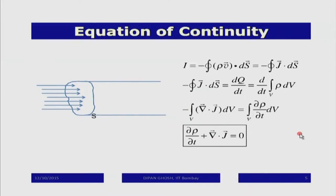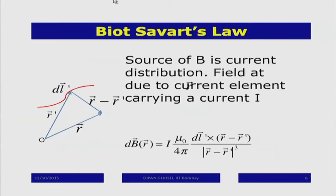This is the equation of continuity. If there is no accumulation, d(rho)/dt = 0, and so I have the definition of a steady current: del·J = 0.